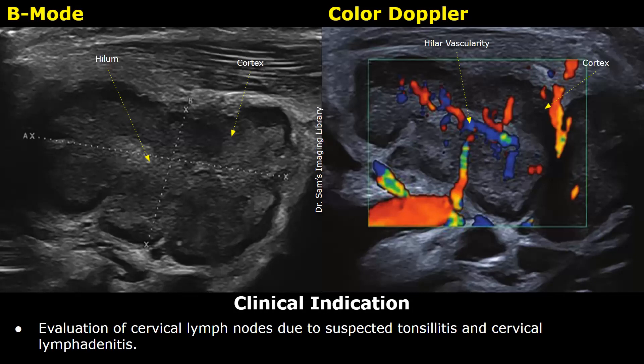This is our first example of a reactive cervical lymph node. In this example, the clinical indication is evaluation of cervical lymph nodes due to suspected tonsillitis and cervical lymphadenitis.